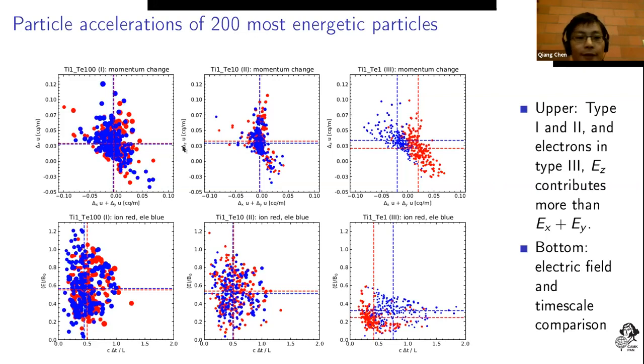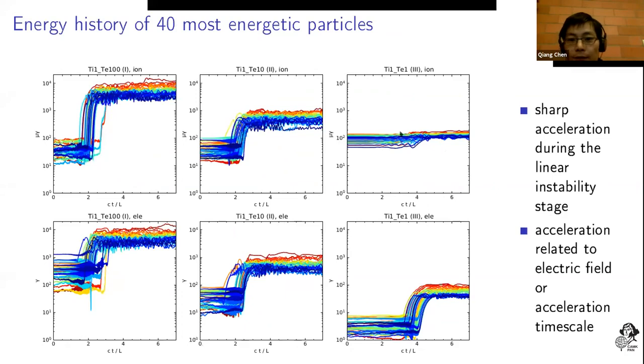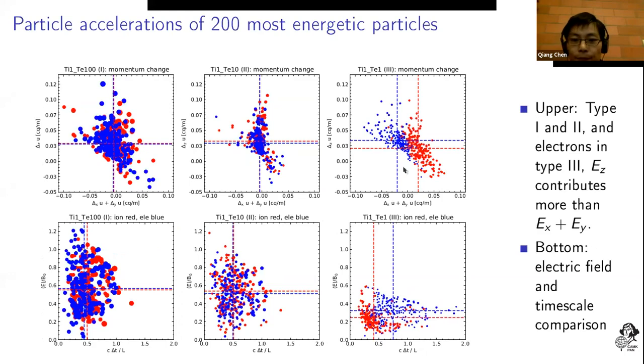However, for ions in the type three case, it's inefficient in the particle acceleration. You can see the z component of the electric field contributed less. The bottom row compares the magnitude of the electric field with the time interval needed to accelerate the particles.